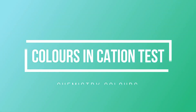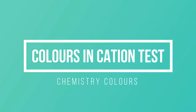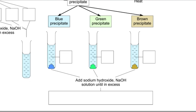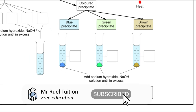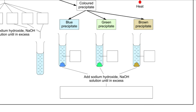Now let's look at the colors in the cation test. When you add a few drops of sodium hydroxide solution, there is a possibility of getting three colored precipitates: blue, green, and brown. A blue precipitate indicates the presence of Cu2+ ion, green indicates Fe2+, and brown indicates Fe3+.